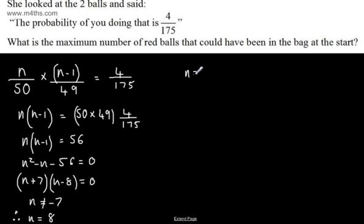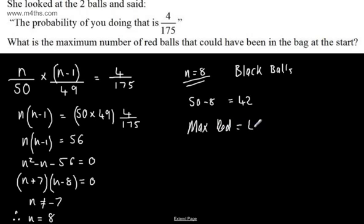So from here, number of black balls is going to be equal to 8, and that now is the black balls. So we know that there were 8 black balls. Therefore, if there were 50, all we need to do is 50 minus 8 is equal to 42. So all of the others might be red, so the max red, and I'll write it here, max red will be equal to 42.